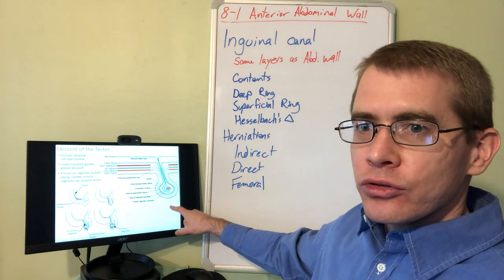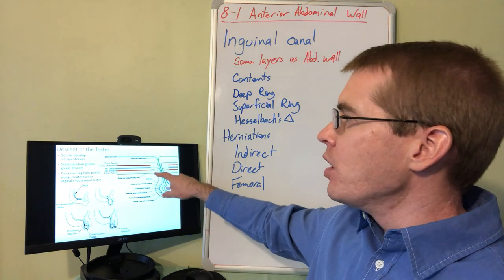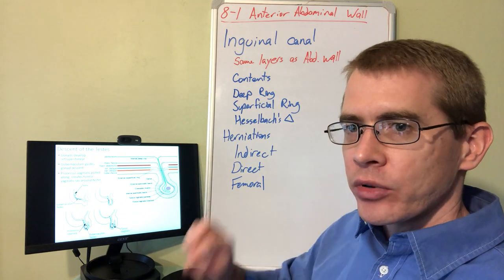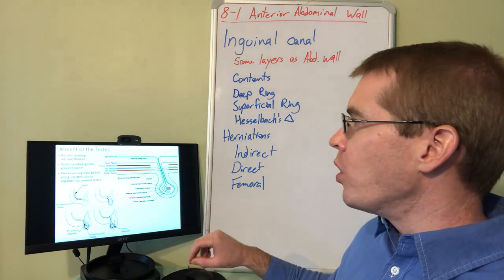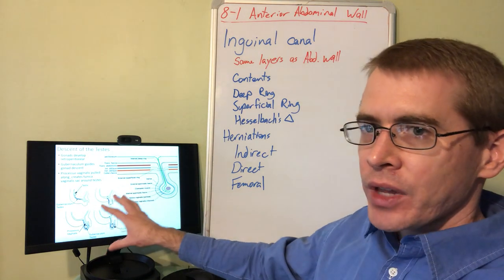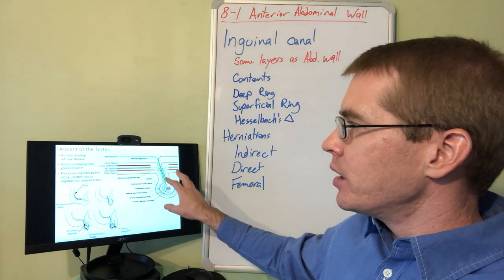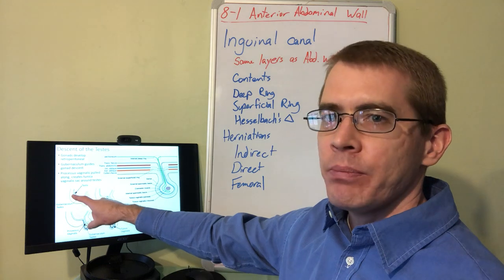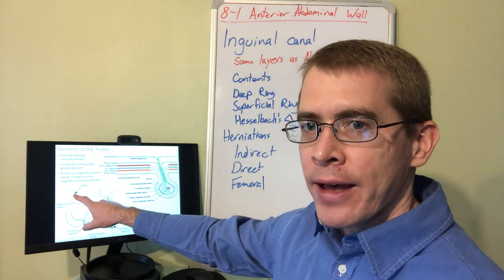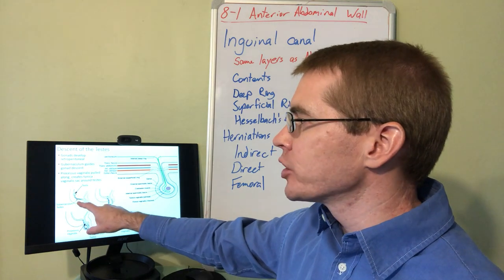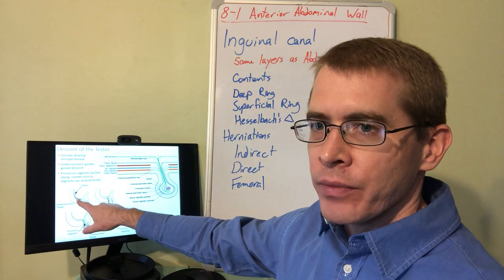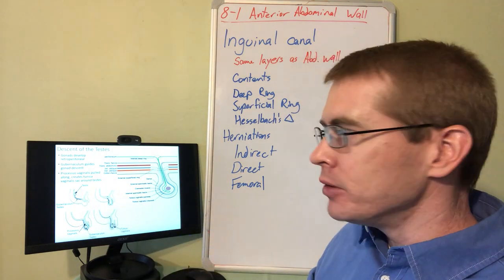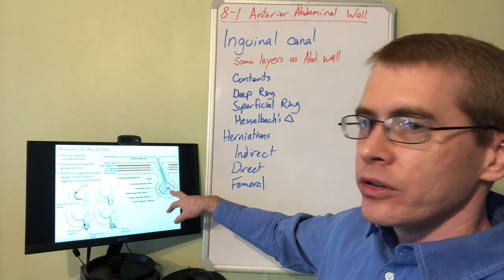In this drawing, you can see all of those same structures discussed in the previous lecture about the abdominal wall. Interestingly, the gonads develop retroperitoneally, meaning they develop in the back of the abdominal cavity. A structure called the gubernaculum then draws the testes down in the male into the scrotum.